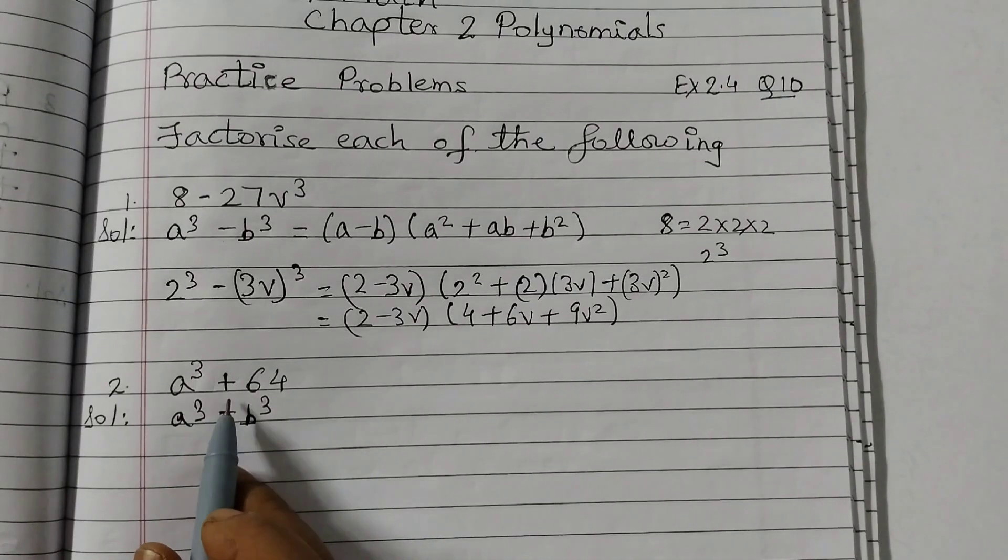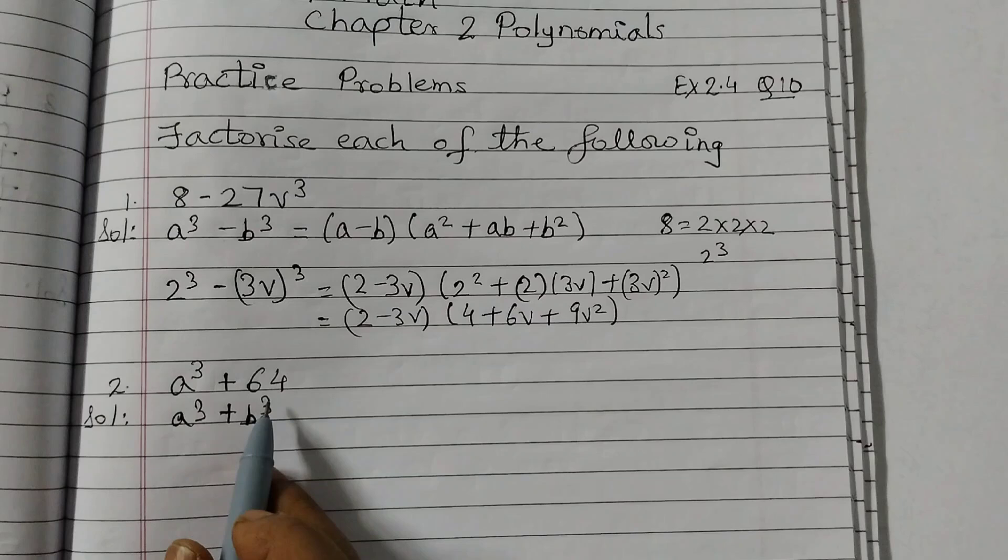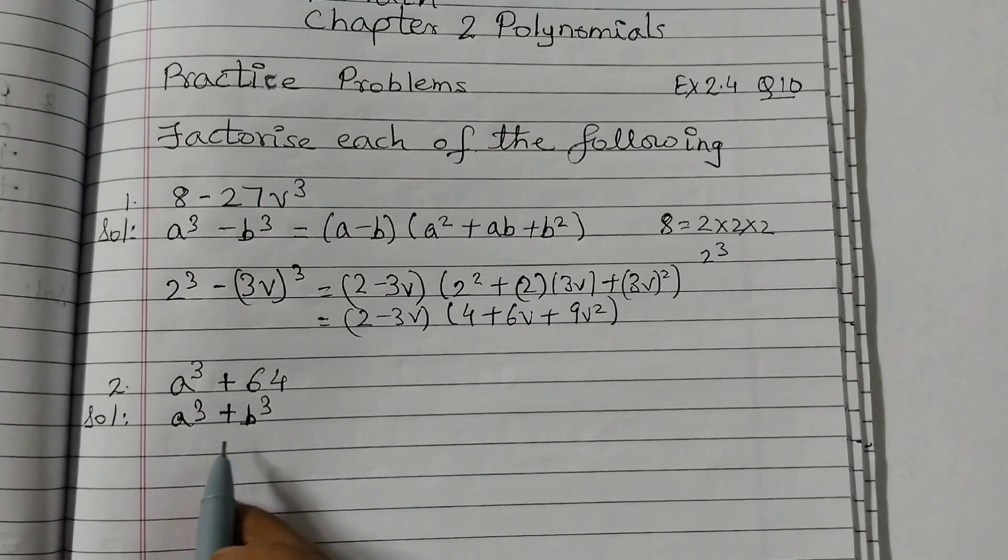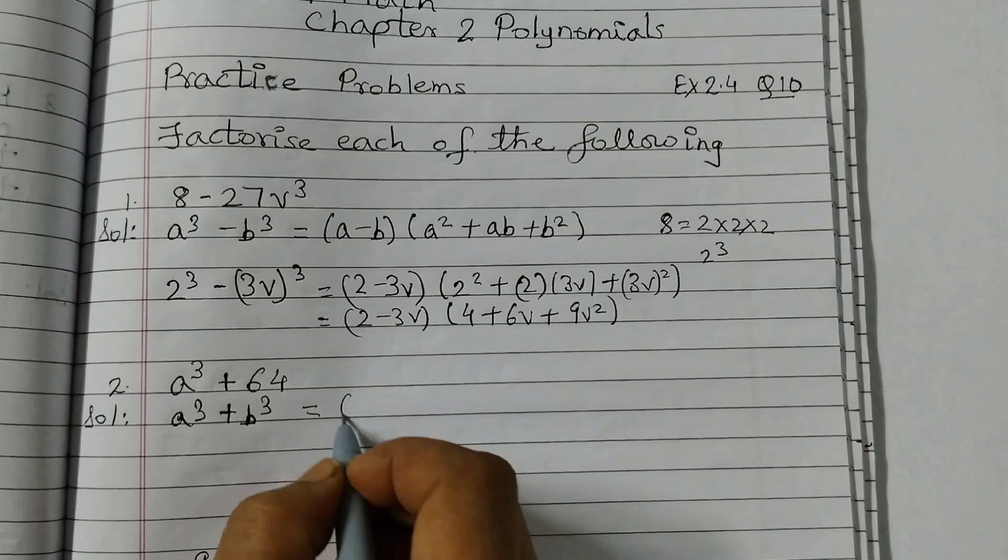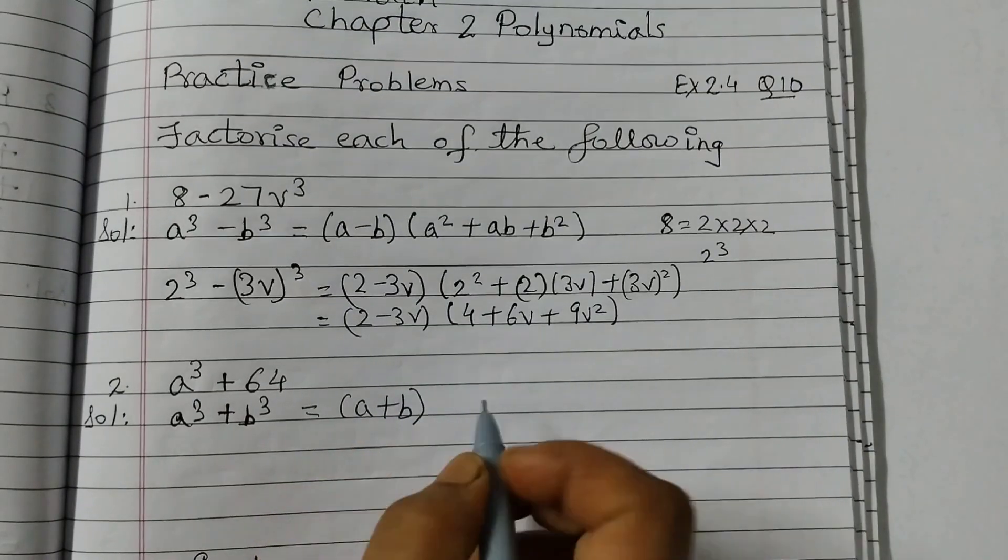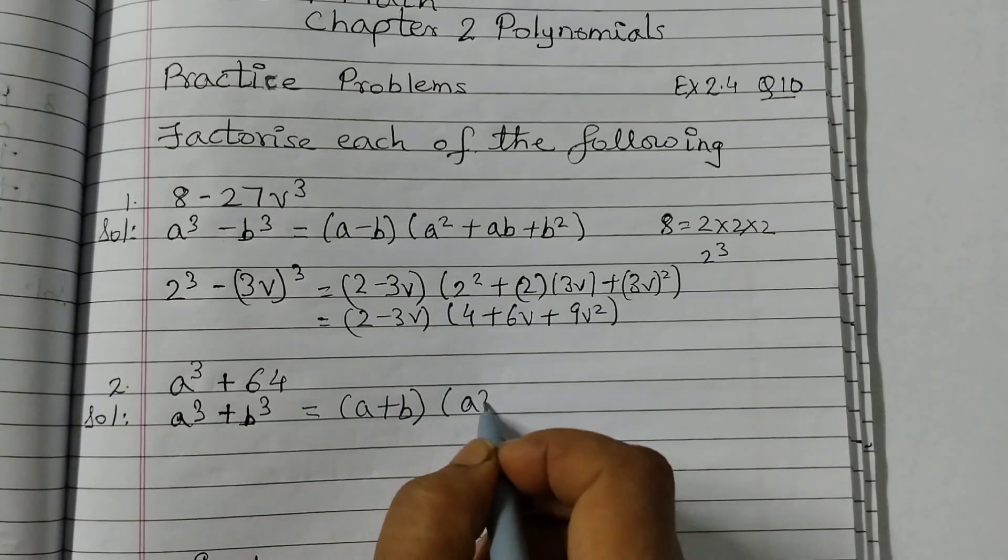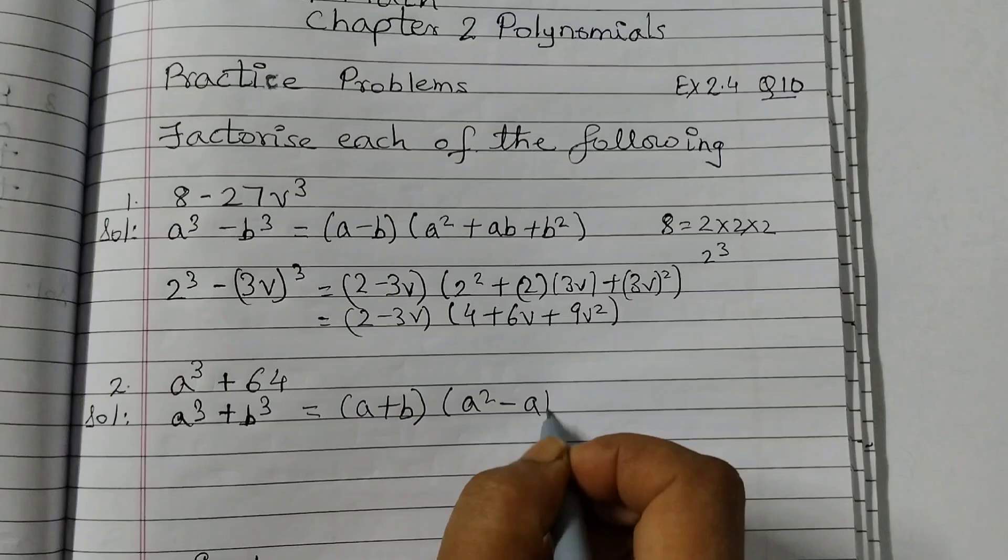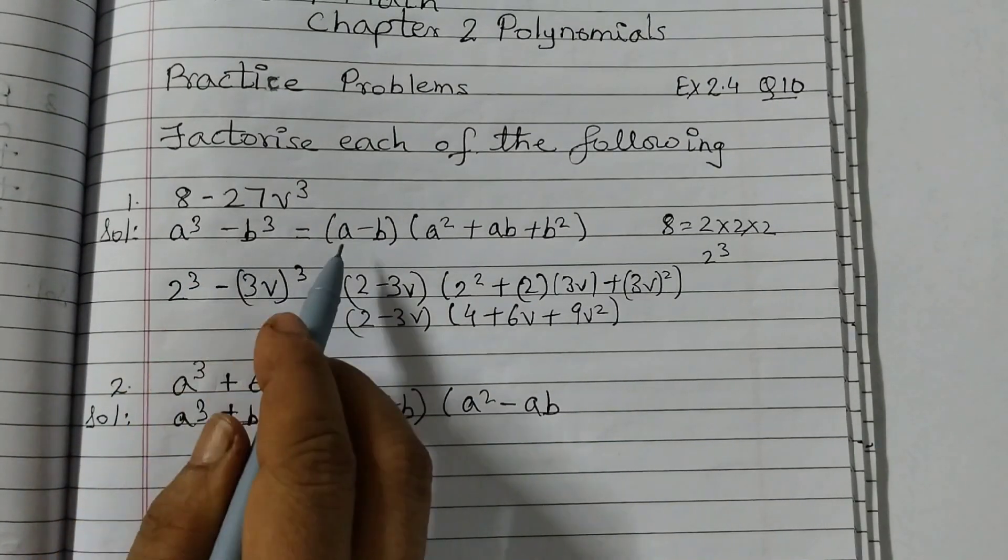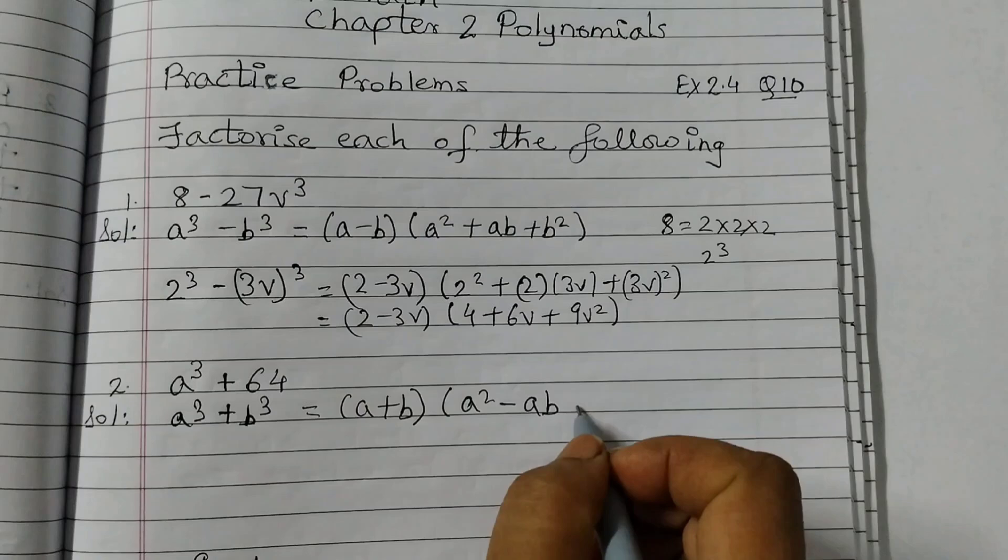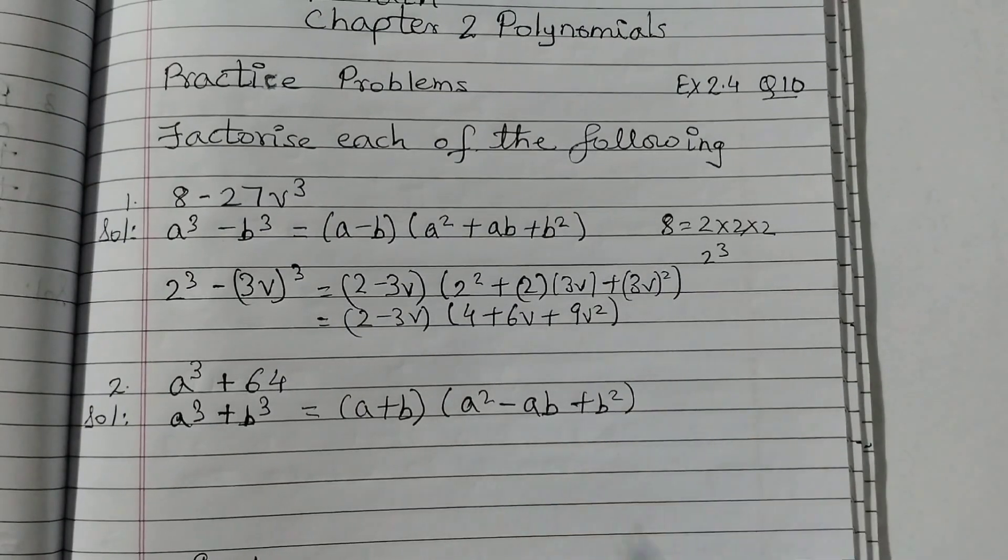The second problem is A cubed plus 64. For this we are going to use the formula A cubed plus B cubed that is equal to A plus B, A squared minus AB. So here we have a minus; for A cubed minus B cubed the minus was here, plus B squared. That's the only difference.